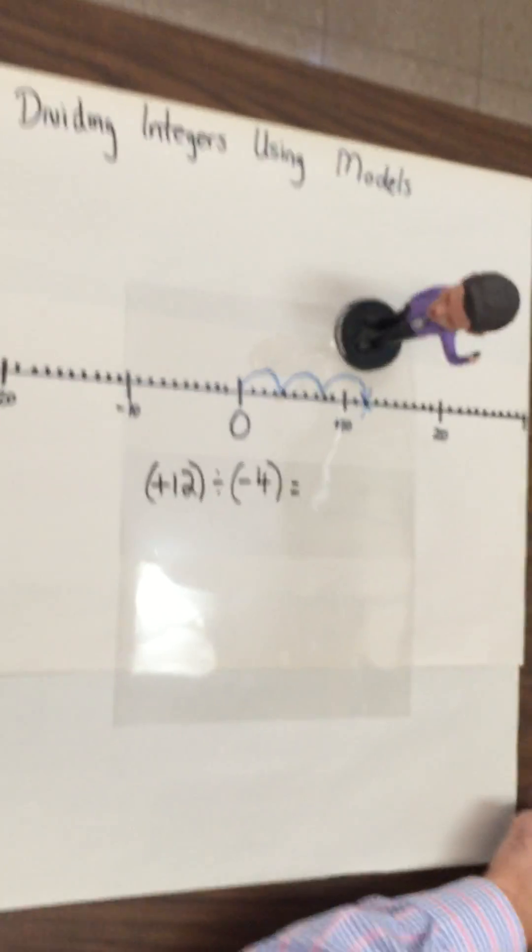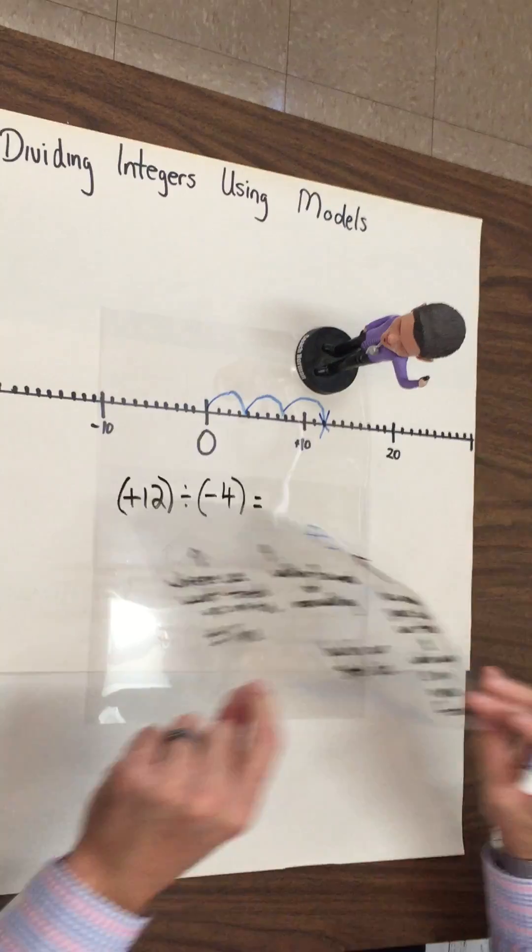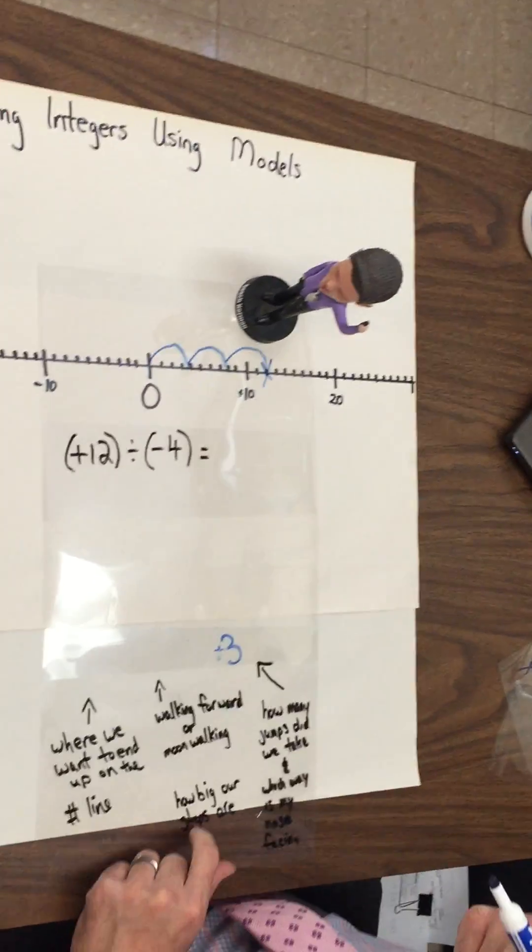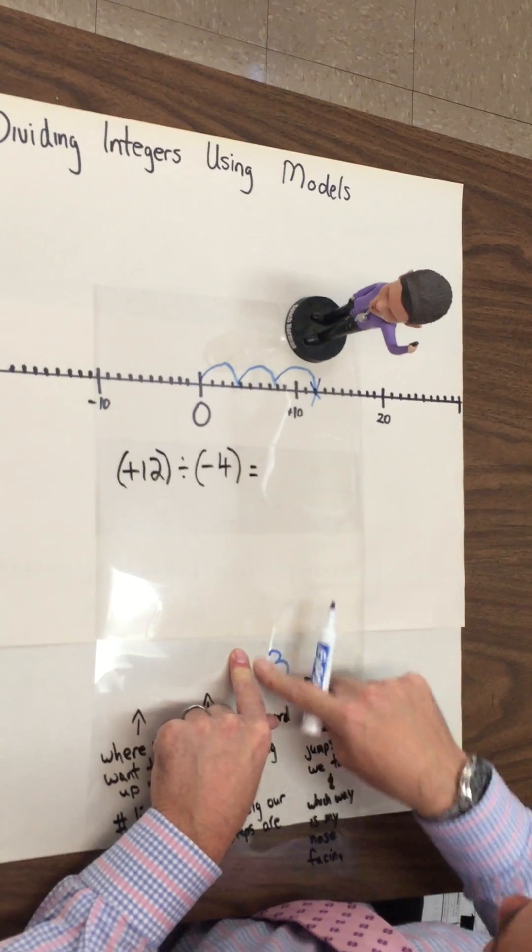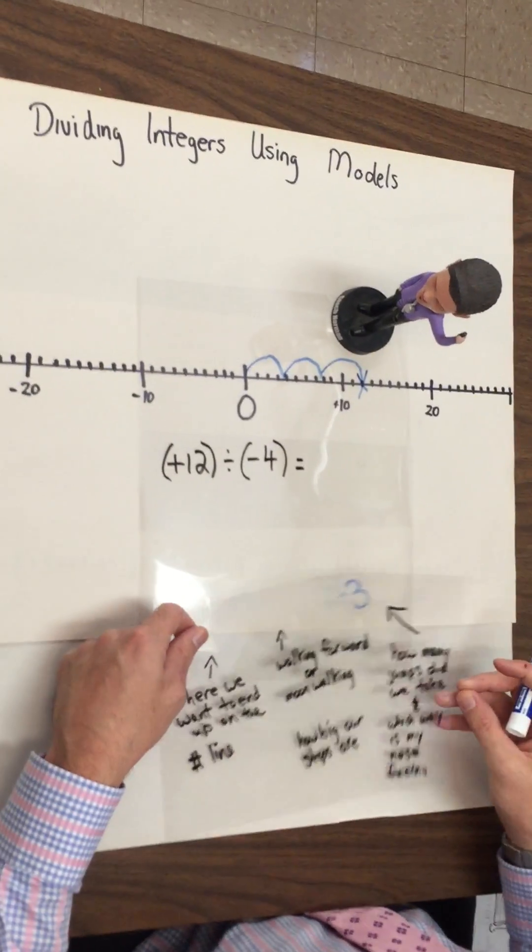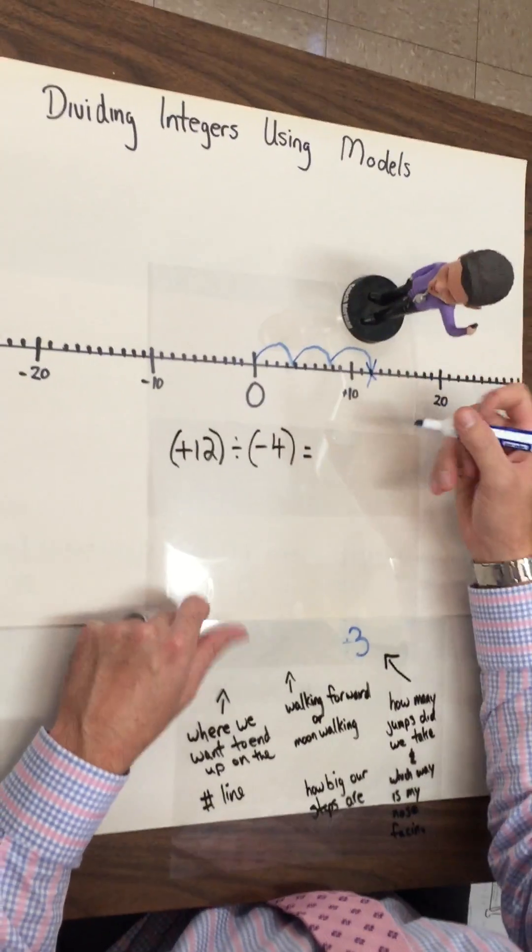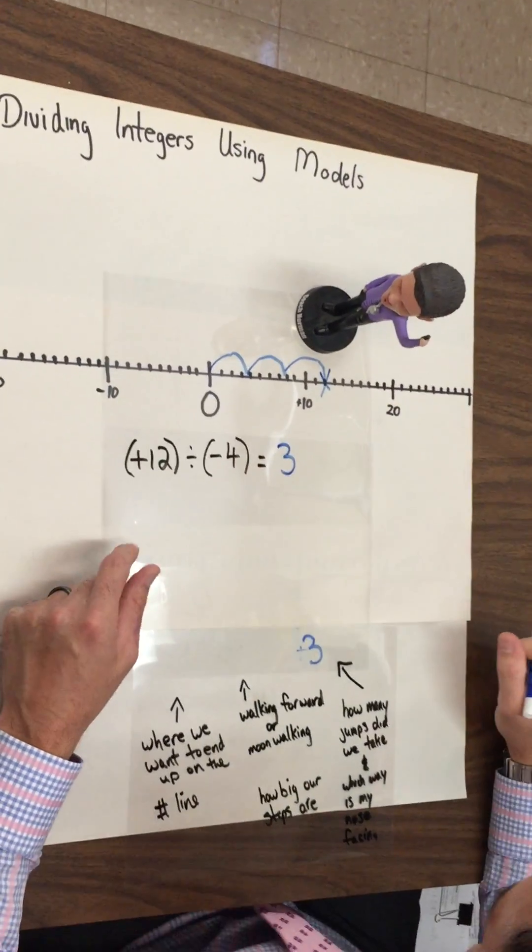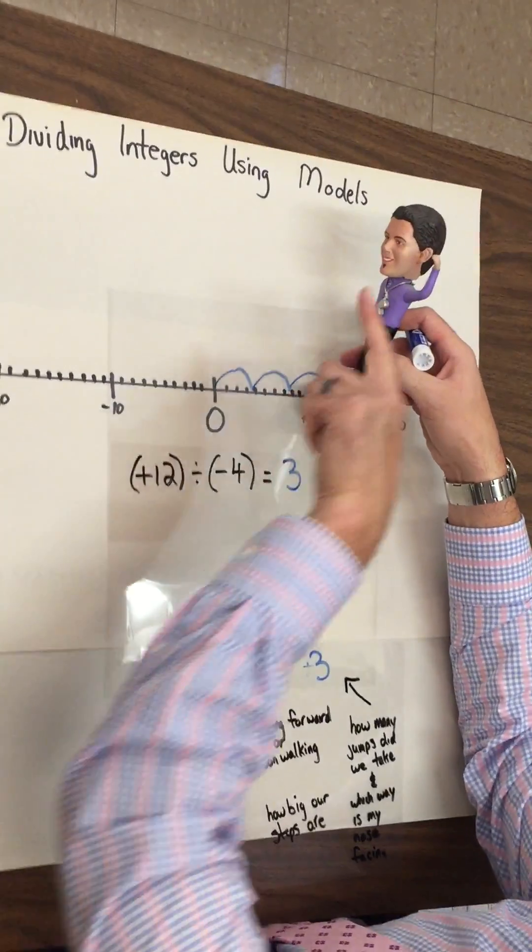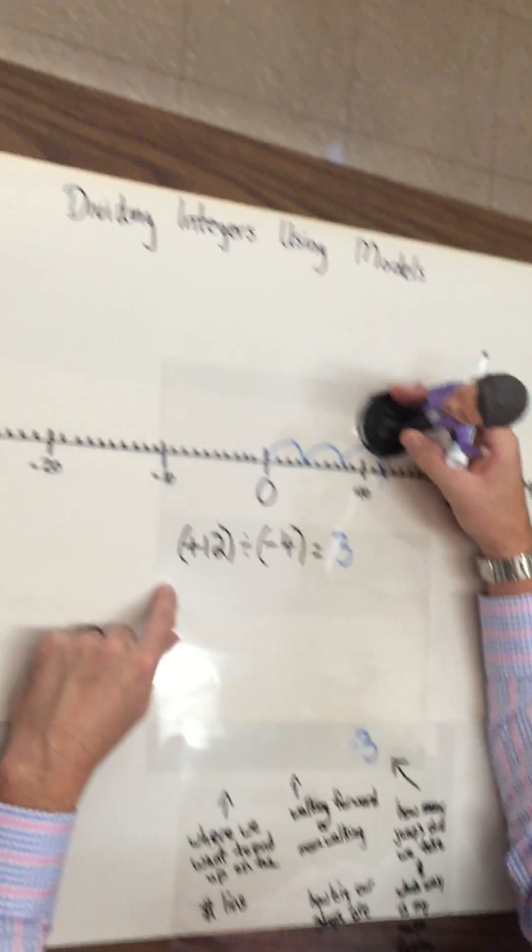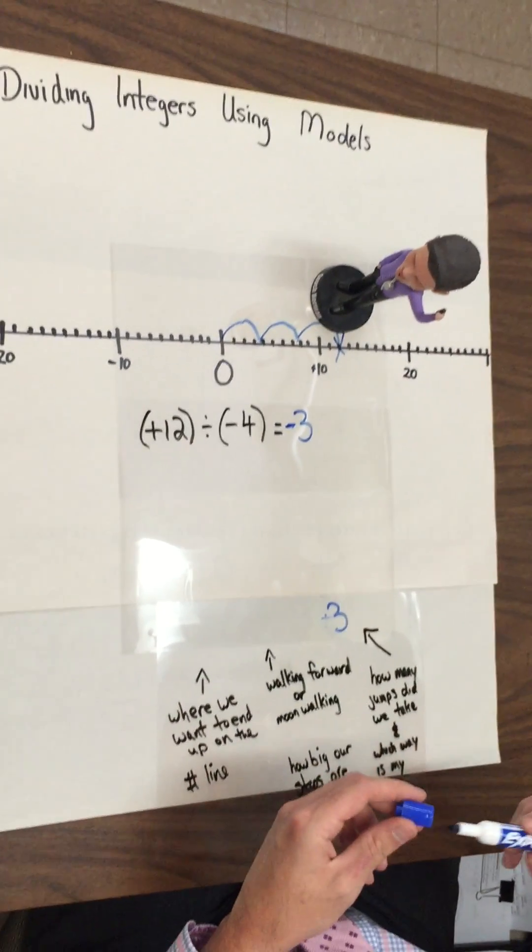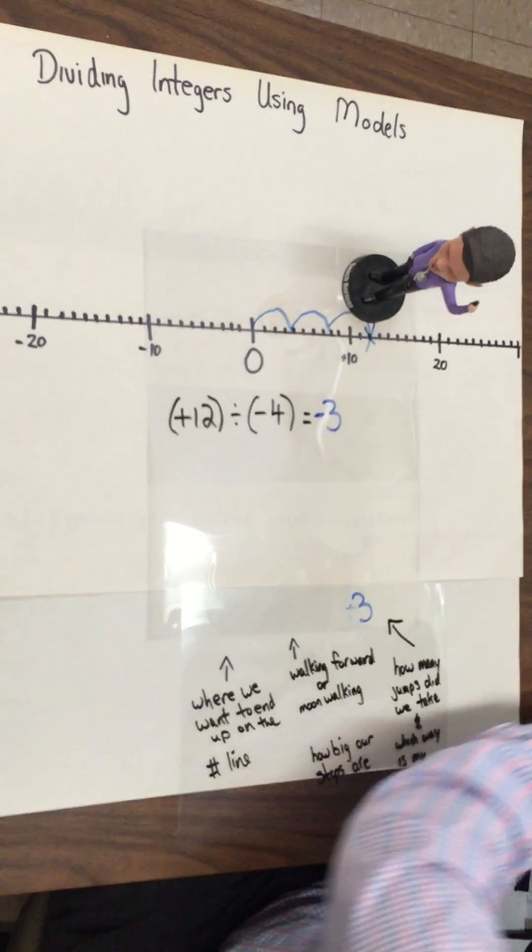So my answer. Well, let's look at our little cheat sheet here. Whoops. Erase that. That doesn't work for us. All right. Here, let's do this. How many jumps did we take? One, two, three jumps. So I know my answer is going to be three. And which way is my nose facing? In this case, my nose is facing towards the negative side. So my answer for positive 12 divided by negative four, you put negative three.